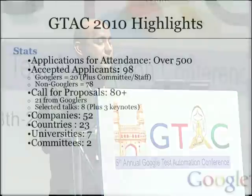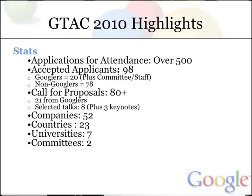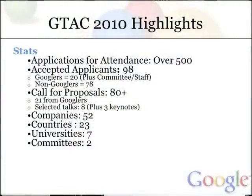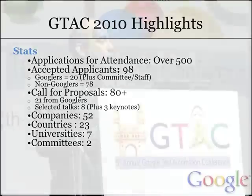We are Google, so we talk about data. I thought I'd share a little bit of data about what's gone into setting this conference. We had over 500 applicants and accepted 98. We tried to keep a very healthy balance between Googlers and non-Googlers — that's the notion to get the right set of people in the room to have these discussions. We actually have a little bit more Googlers than 20 because we have Google staff and senior leadership here. We had a call for proposals, got 80-plus proposals, and split them into three different categories. 21 of those proposals were from Googlers themselves, and we tried to make sure this was not a Google-intensive event. That actually led to the pre-GTAC event, because we wanted the great Google speakers to also have an opportunity to share their technology.